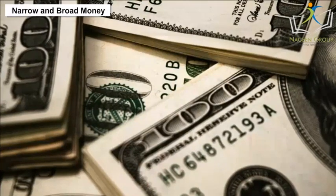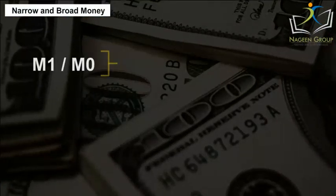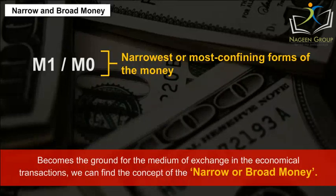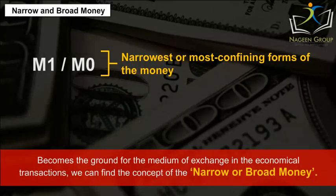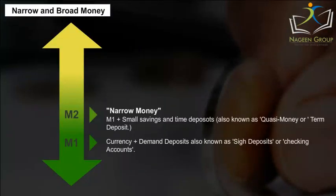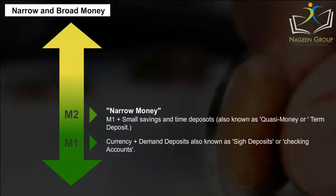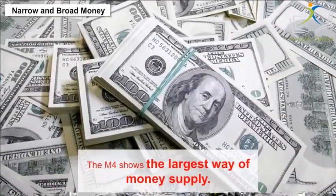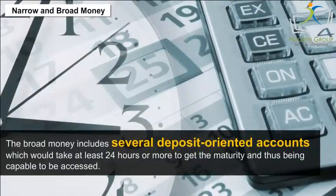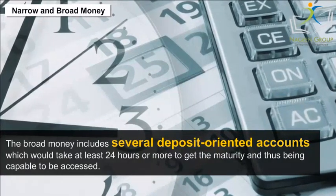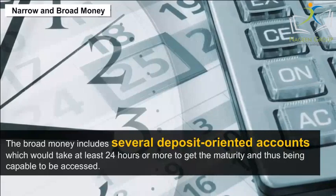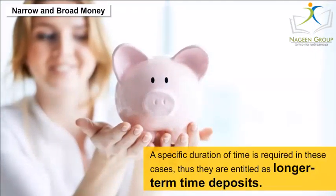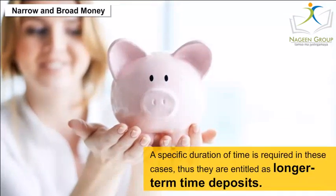Narrow and Broad Money. M1 or M0 is the narrowest form of money and forms the ground for the medium of exchange in economic transactions. In general, M1 and M2 depict the narrow form of money, while M3 and M4 signify broad money. M4 shows the largest measure of money supply. Broad money includes several deposit-oriented accounts which would take at least 24 hours or more to mature and thus be accessible — a specific duration of time is required, and thus they are entitled as longer-term time deposits.